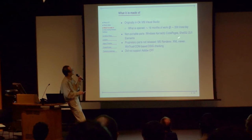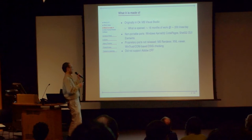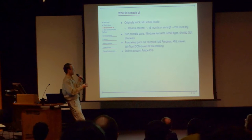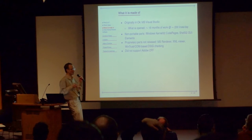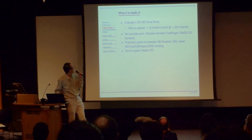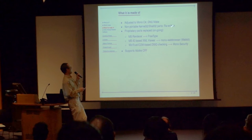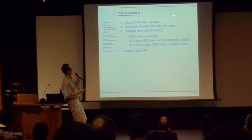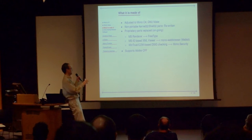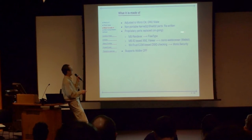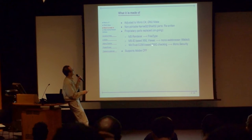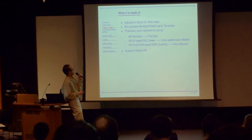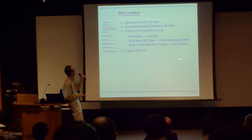The proprietary parts that were not released include the XML viewer and something to do with security — checking the digital signature in the font itself. Also, Microsoft being Microsoft, they mainly supported TrueType and did not support Adobe's CFF component. Since I took it up, I've adjusted the build system to build under Mono with GNU Make. All the non-portable parts have been rewritten. The proprietary parts are being gradually replaced: the renderer is being replaced with FreeType, the XML viewer has been rewritten in a platform-independent manner and hooked into WebKit where available, and the digital signature has been completely rewritten using the Mono security framework. It now also supports Adobe CFF font format.